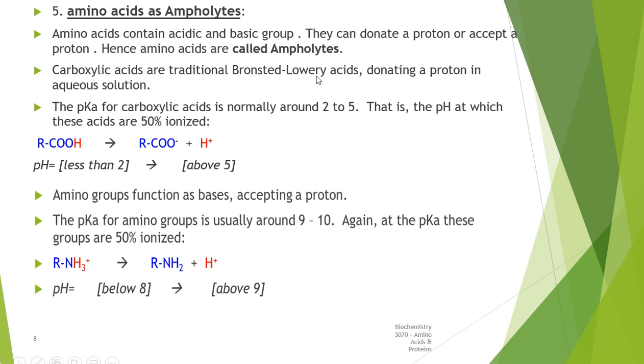According to the Bronsted-Lowry acid theory, carboxylic acids of amino acids can donate a proton in aqueous solution around 2 to 5. If this is the case, it is able to donate the proton less than 2 and above 5.